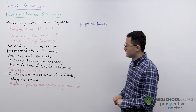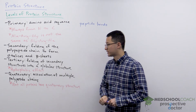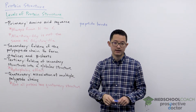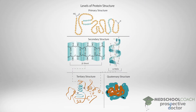Next we have secondary structure. Secondary structure is the folding of the polypeptide chain to form alpha helices and beta sheets. In this diagram you can see examples of alpha helices, where the polypeptide chain forms a helix held together by interactions within the chain. You can also see beta sheets, where different parts of the chain line up to form sheets. Beta sheets can be parallel or anti-parallel — the peptide chain arrows face the same direction for parallel, or opposite directions for anti-parallel.